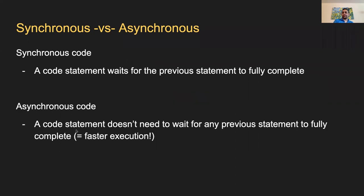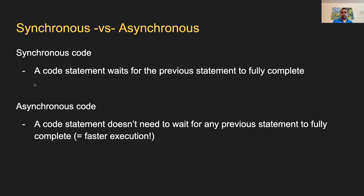Synchronous code waits for the previous statement to fully complete — if you have lines A, B, and C, A completes fully, then B completes, then C. Asynchronous code doesn't always need to wait for the previous execution. A might take a long time to complete, but B and C might finish before A does. Asynchronous code generally means faster execution because independent items can be done in parallel instead of one waiting for the other. What we've done up to this point has mostly been synchronous code, but we'll talk more about asynchronous code especially with the Fetch API.